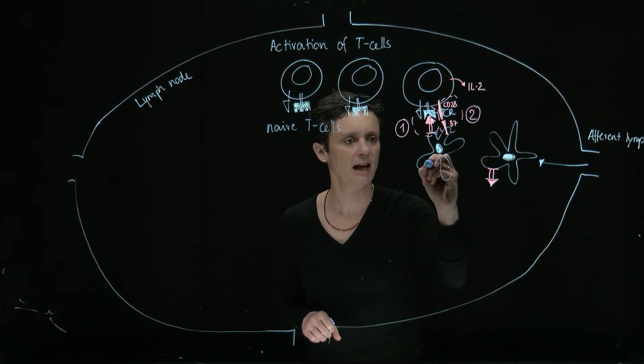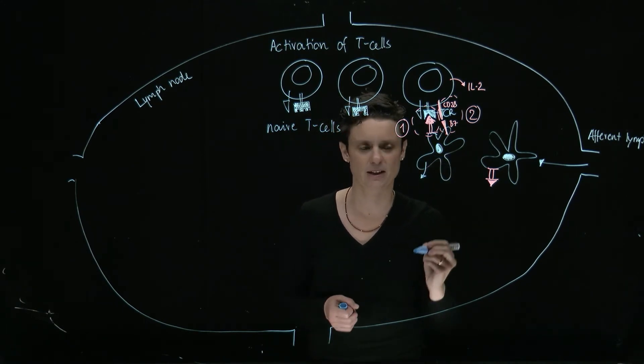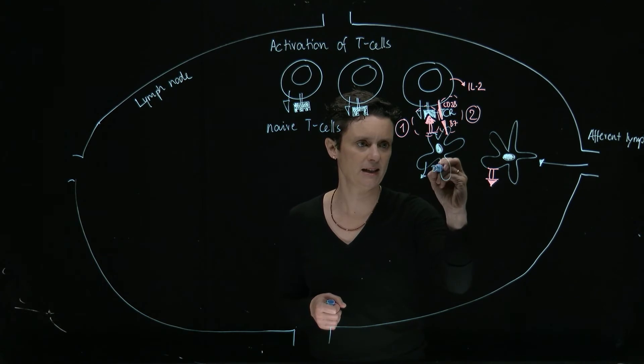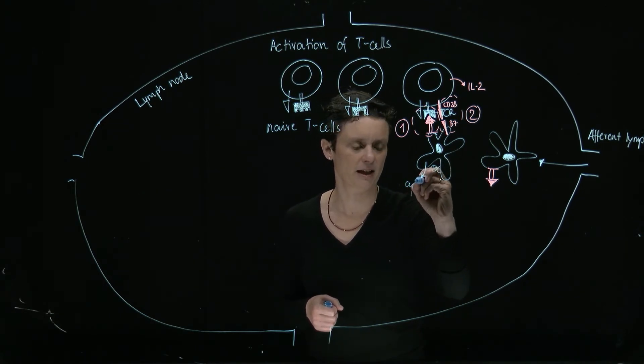And then also, and that's going to be signal three, the antigen presenting cell, in this case the dendritic cell, the DC here, is going to make some cytokines.